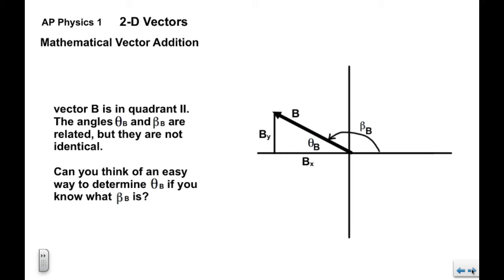But if we're in quadrant 2, like vector b, the angles are not the same. They are related.